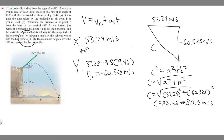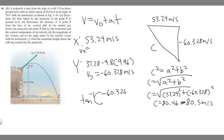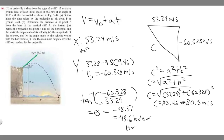Part E asks for the angle made by the velocity vector with the horizontal. We take the arctangent of Y over X: arctangent of minus 60.328 over 53.24, which gives approximately minus 48.57 degrees, rounding to minus 48.6 degrees. The negative sign means the velocity is directed below the horizontal.